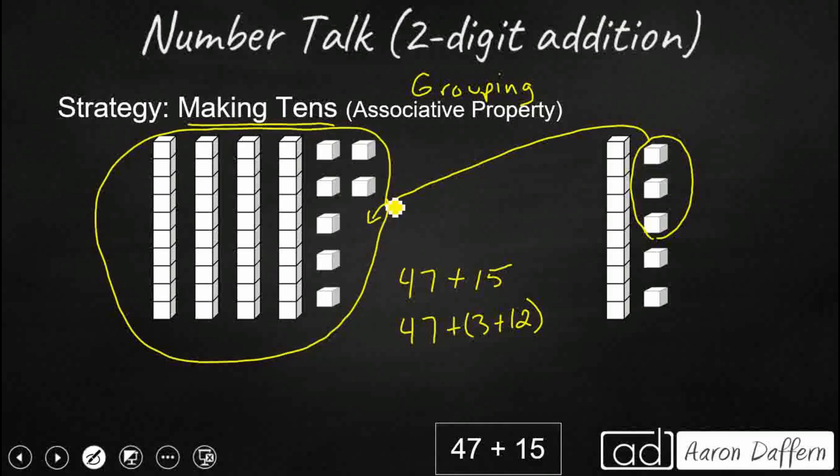So I'm going to steal 3 from the 15, add it with my 47, and that's what the associative property does, is it lets me add up the 47 and the 3 first. So I broke up that 15. And 47 and 3, well, I know I wanted to get up to 50. So that's going to get me 50 and 12, and that's a little bit easier to add up. So 50, 12, that's going to get me 62. So hopefully, that's what you got in your head, 62. So that's making tens.